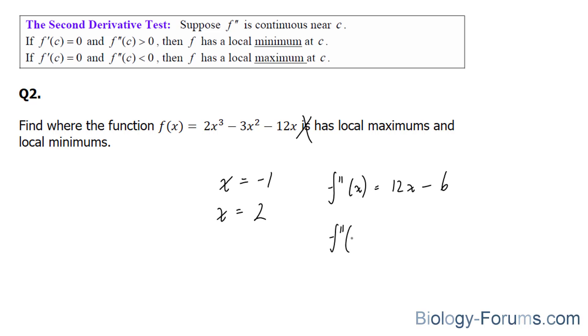f double prime at negative 1 gives us 12 times negative 1, that's negative 12, minus 6 is equal to negative 18. And similarly, f double prime at 2 is 12 times 2, which is 24, minus 6 is equal to positive 18.